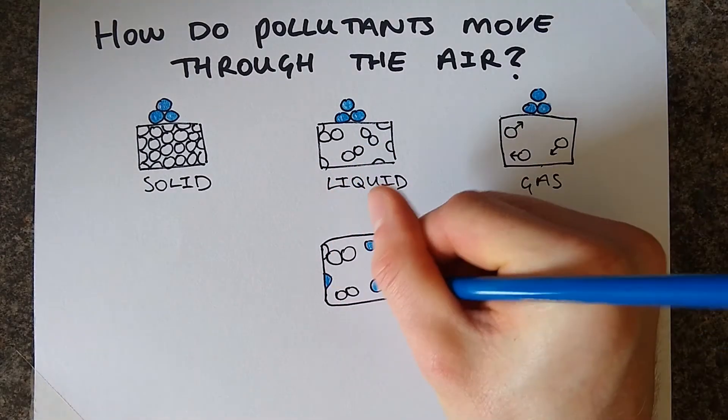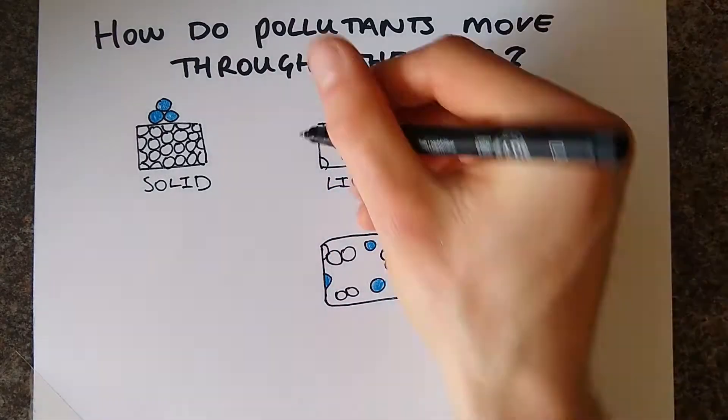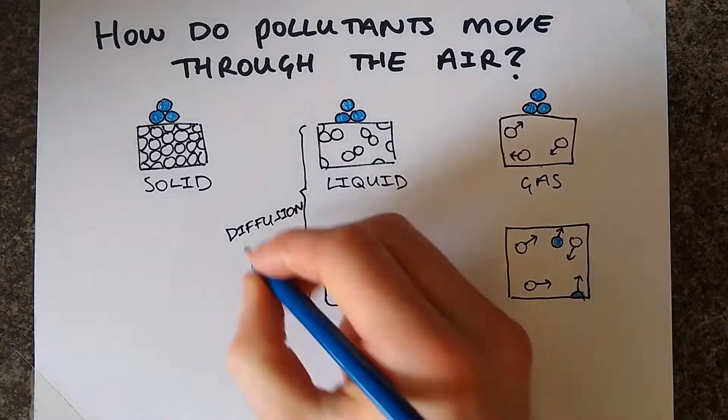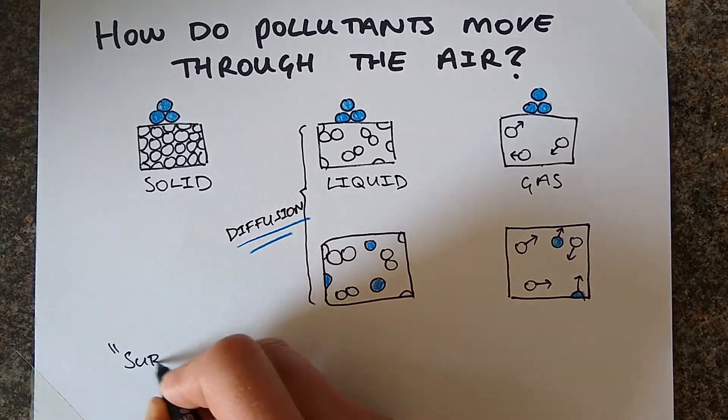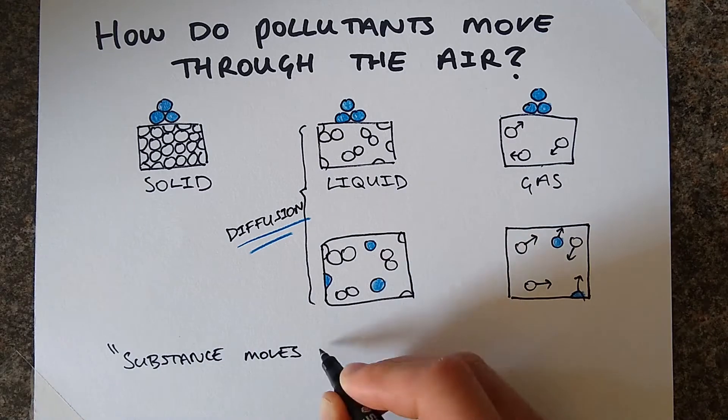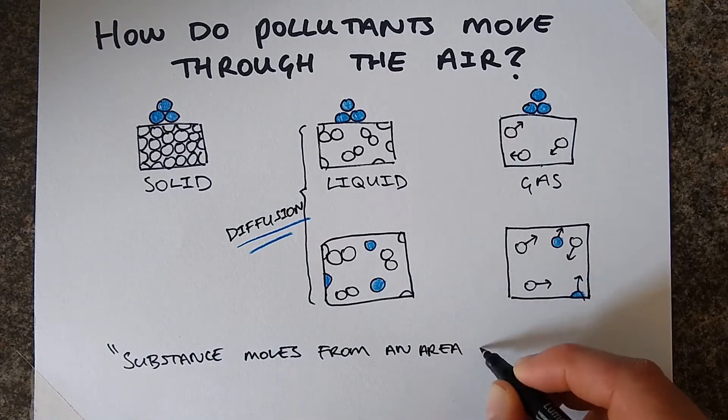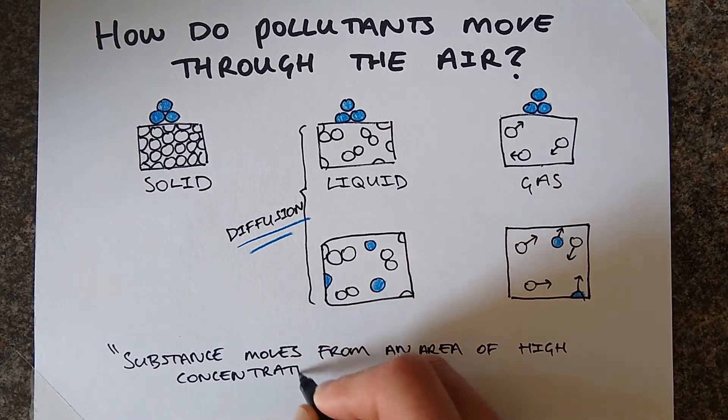It could in a liquid and gas though. This process is called diffusion. The textbook definition of diffusion is when a substance moves from an area of high concentration to low concentration. This process is passive, meaning that so long as there is a concentration gradient, it will happen.